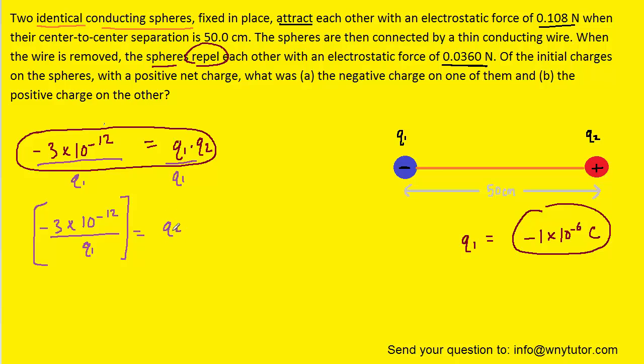And then to solve for q2, we can refer back to this equation, whereby we can plug in our value of q1. And when we do that, we see that q2 turns out to be positive 3 times 10 to the minus 6 Coulombs.